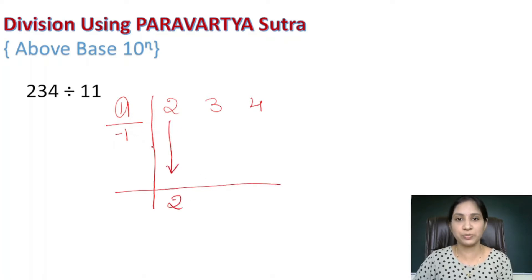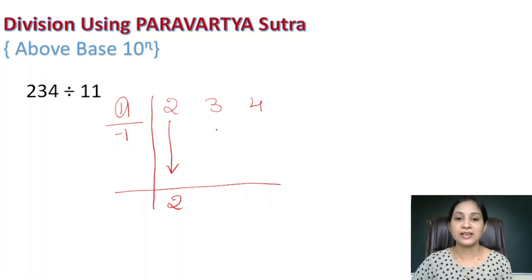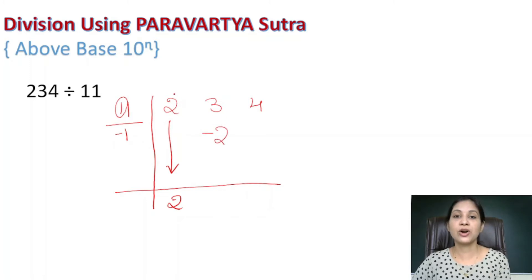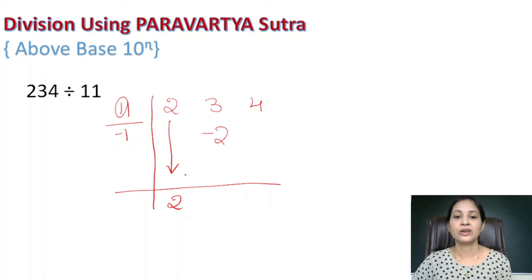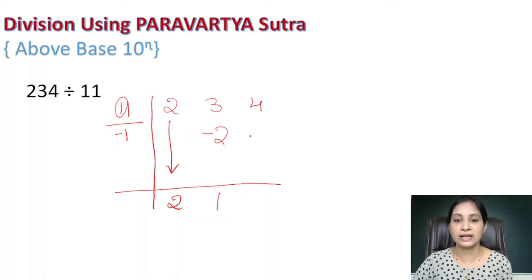Now start dividing: write the first digit 2 as it is in the quotient part. The next step is multiplying 2 by minus 1 (the transpose), giving minus 2. Write minus 2 below the second column (which holds digit 3). Then 3 minus 2 equals 1. Again multiply 1 by minus 1, giving minus 1. Then 4 minus 1 equals 3.